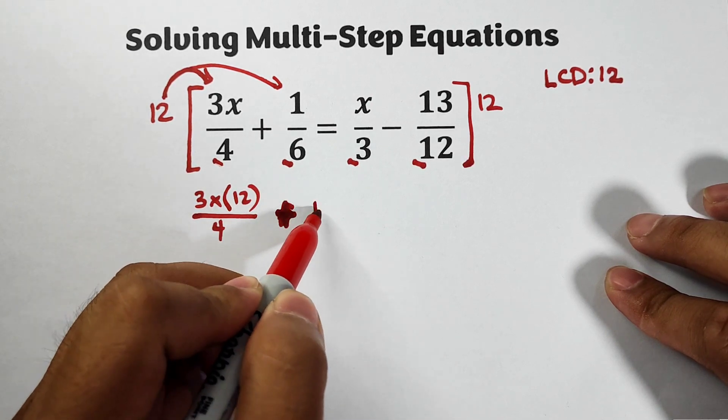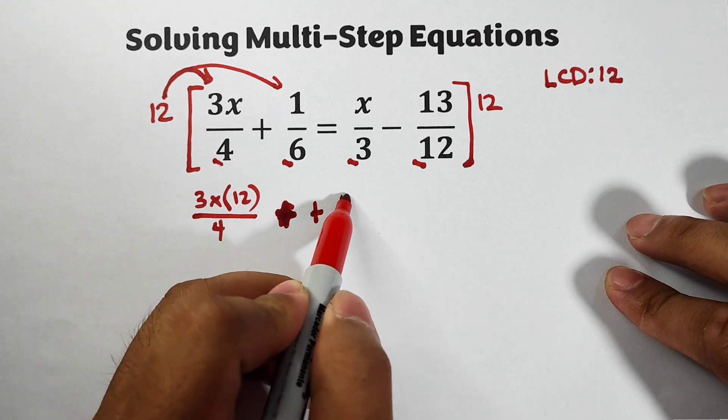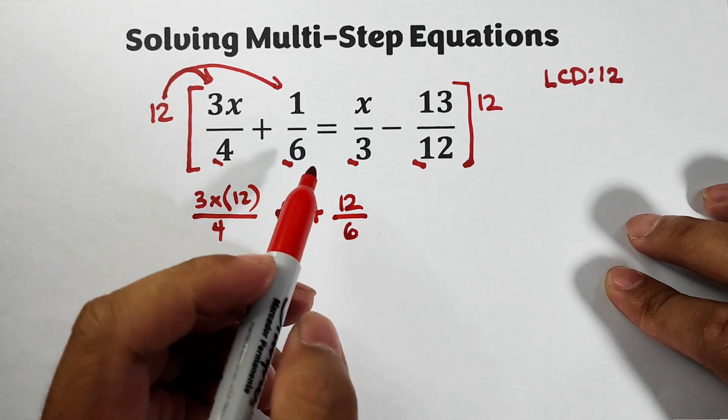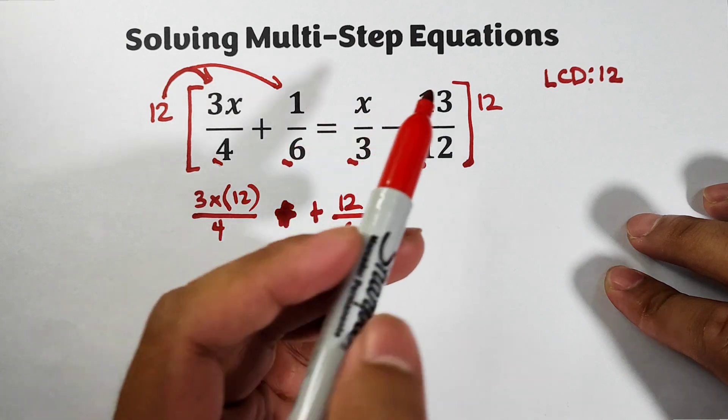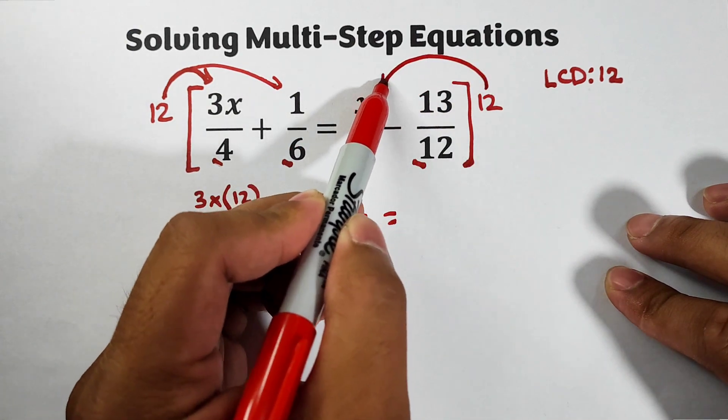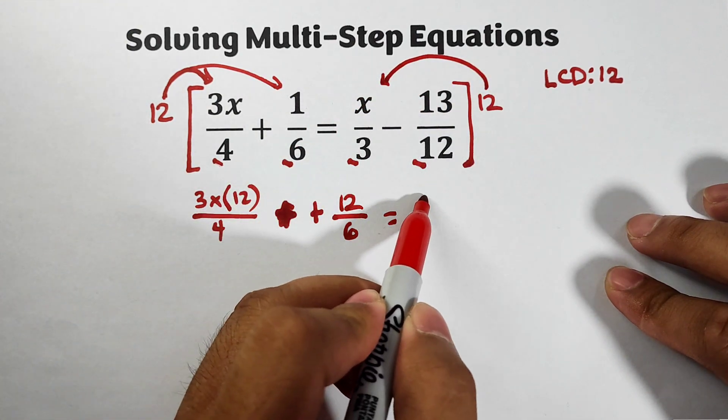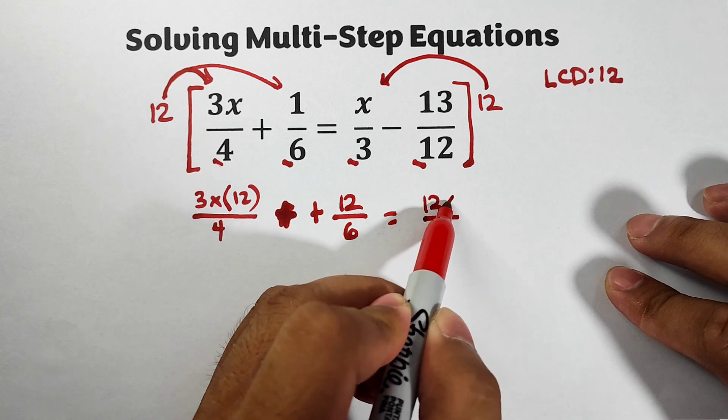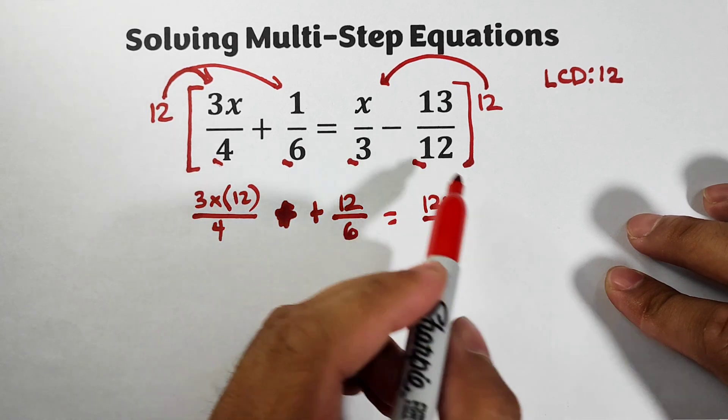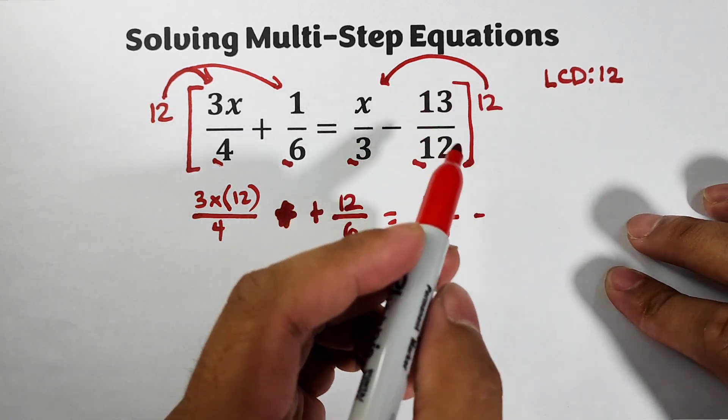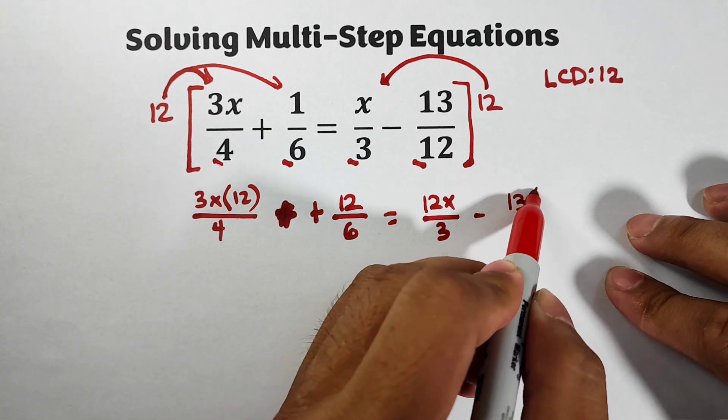Plus 12 over 6 is equal to, and on the other side 12 times x over 3, that is 12x over 3, then minus this one we have 13 times 12, 12 over 12.